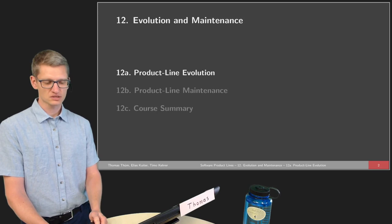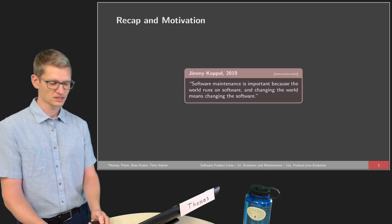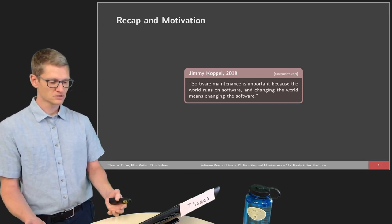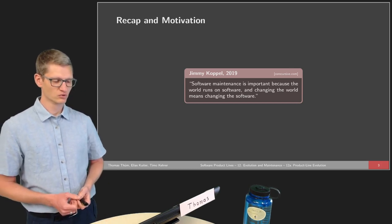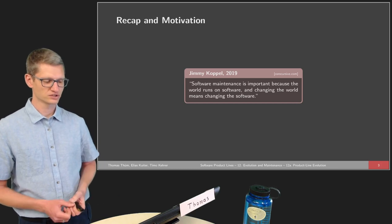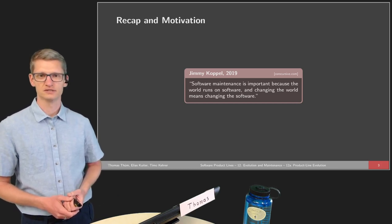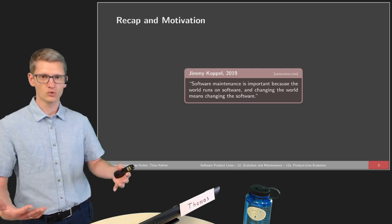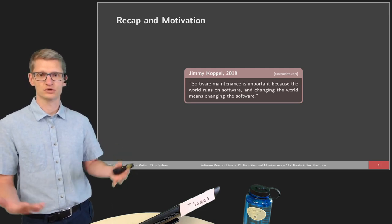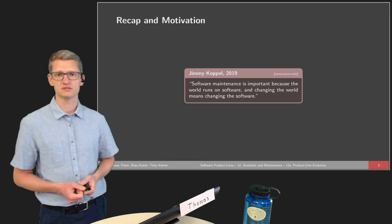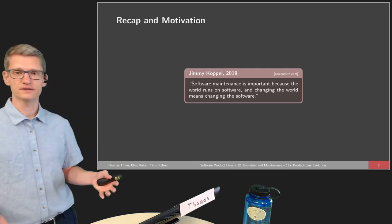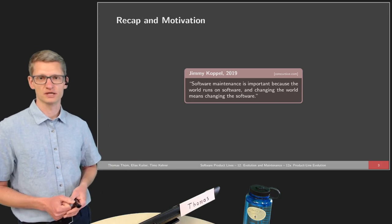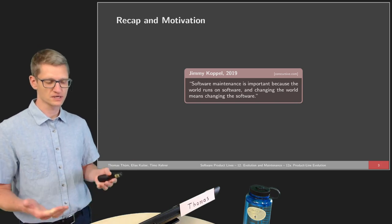Let's talk about product line evolution. I'd like to start with a quote by Jimmy Koppel: "Software maintenance is important because the world runs on software, and changing the world means changing the software." We are seeing that more and more things in our world are actually controlled and supported by means of software.